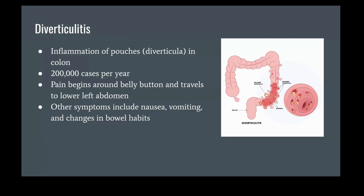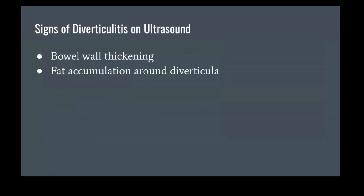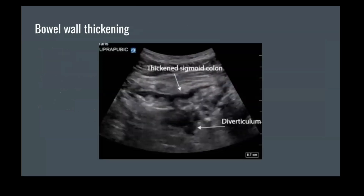Pain usually begins around the patient's belly button and travels to the lower left abdomen. Other symptoms include nausea, vomiting, and changes in bowel habits. Signs of diverticulitis on ultrasound include bowel wall thickening and abnormal fat accumulation around the diverticulum.